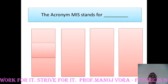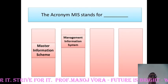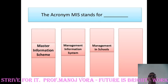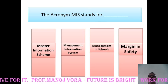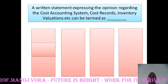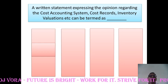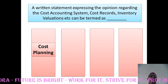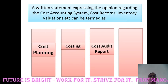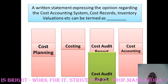The next question: the acronym MIS stands for — master information scheme, management information system, management in schools, or margin and safety. Your answer has to be management information system. A written statement expressing the opinion regarding the cost accounting system, cost records, inventory valuation, etc. can be termed as — cost planning, costing, cost audit report, or cost accounting. The right answer is cost audit report.